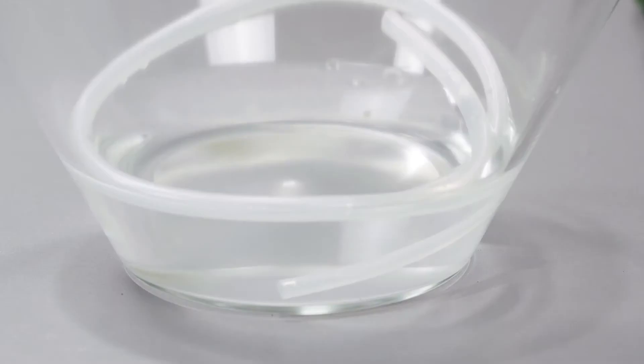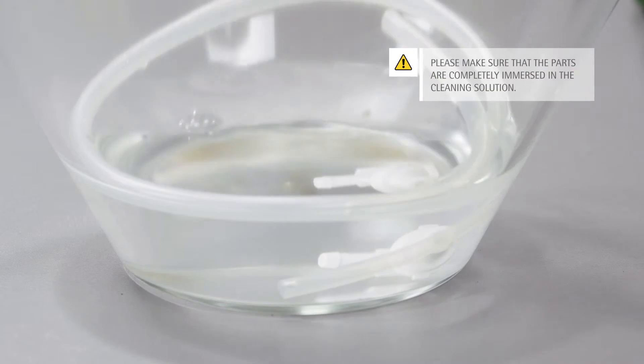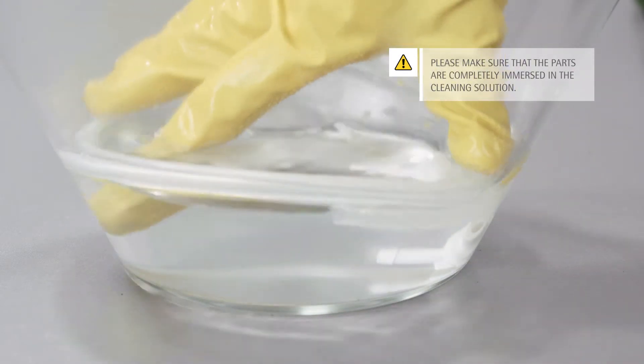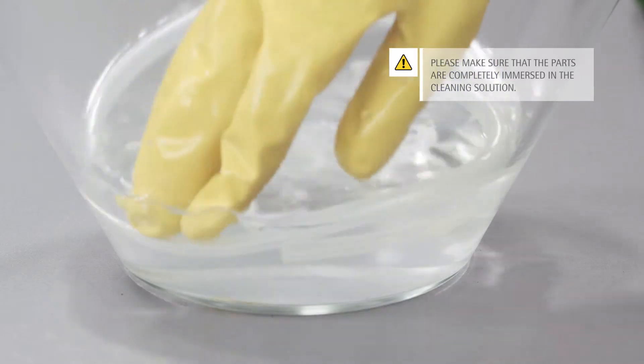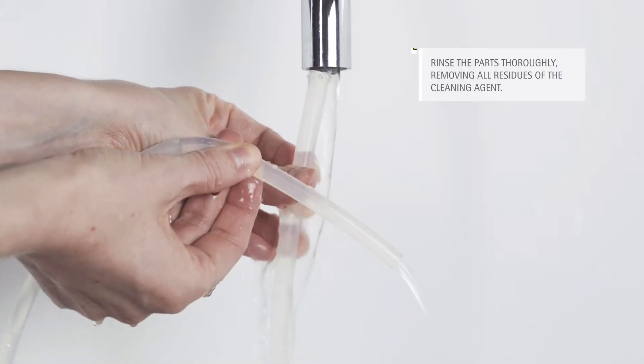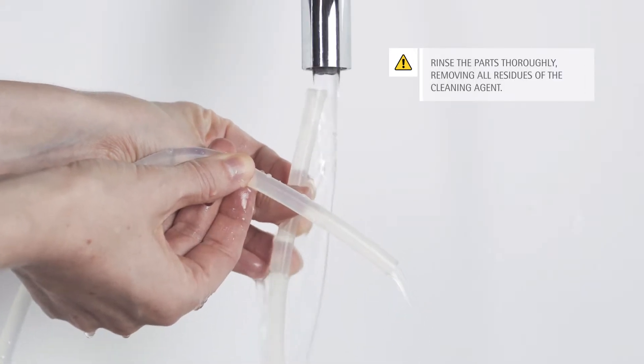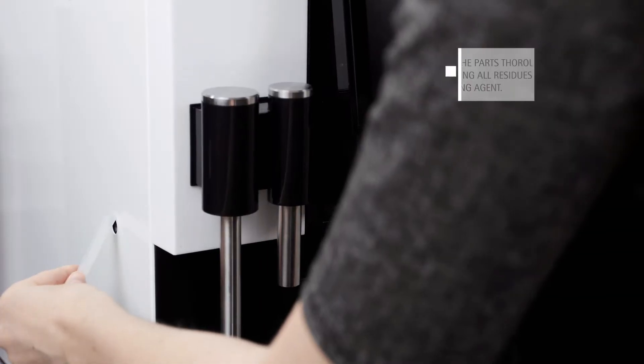Soak the milk hose in the cleaning solution for at least 5 hours. Make sure that the cleaning solution flows inside the hose. After soaking, rinse the milk hose with clean water. All parts must be dried thoroughly after cleaning.